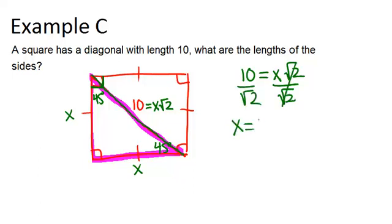x equals 10 over root 2 which we now want to rationalize by multiplying both the numerator and the denominator by root 2.